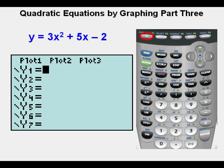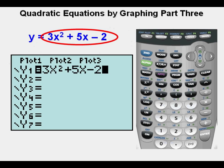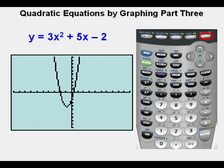Joe goes to y equals to enter the equation. Now he enters the function y = 3x² + 5x - 2 in y1. Now he graphs by pressing the graph key or zoom 6 to assure a standard window.